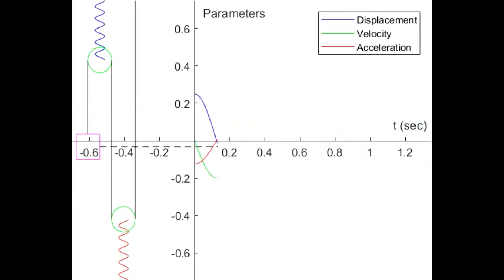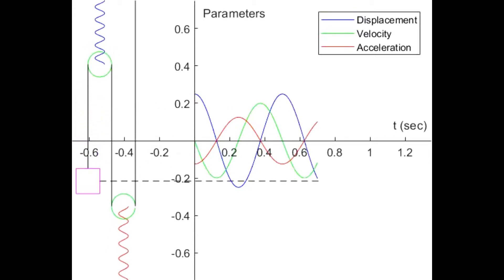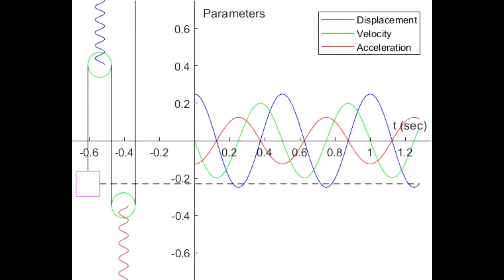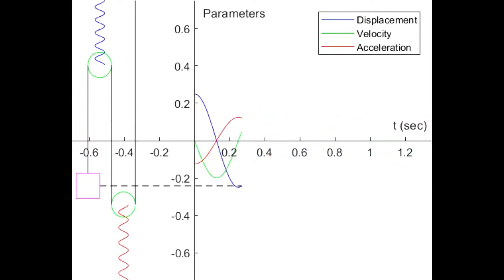The setup has two pulleys attached to springs on a rigid support and connected to a block by a string. The springs have different spring constants, with the blue spring having a higher K-value than the red spring. This can be observed by the difference in the amplitude of oscillation of the pulleys.